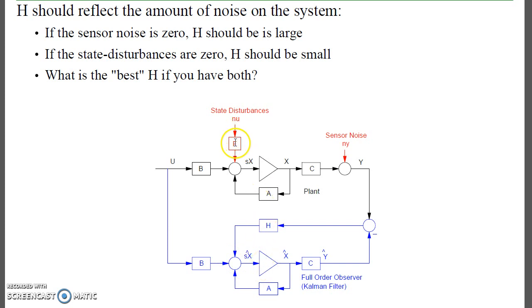If I have both state disturbances and sensor noise, then I need a trade-off. If H is too small, then the input disturbances will cause the observer not to track. If H is too large, then the sensor noise will cause the observer not to track. So the question is, what is the best H? What H makes the observer states as close as possible to the plant states?